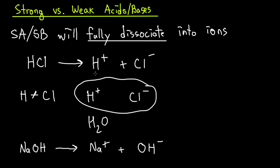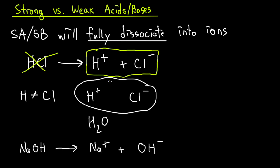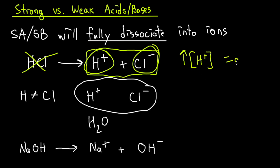Full dissociation means we're going to have no more reactant — all we're going to have is product. The H+ and Cl− plus the water are the only things in the solution. When we have more H+ and more Cl−, there's going to be an increase in the concentration of H+ in the water, which will cause it to be acidic. Only the very strong acids will be extremely acidic at the zero to one scale.